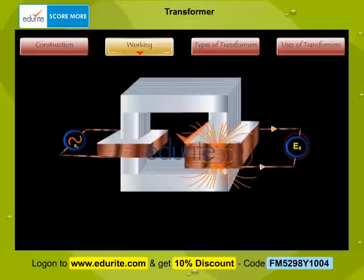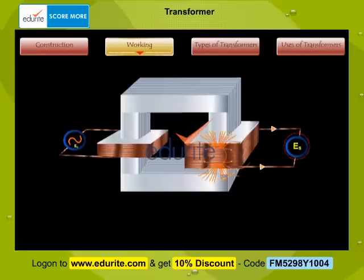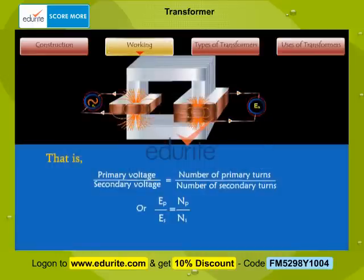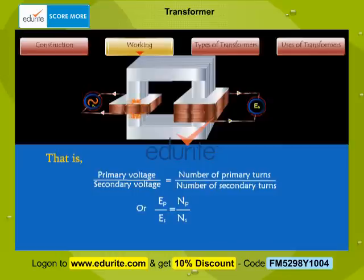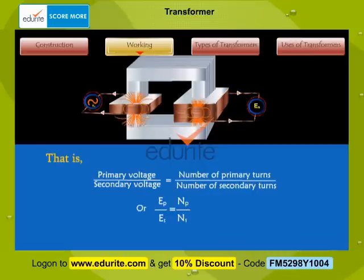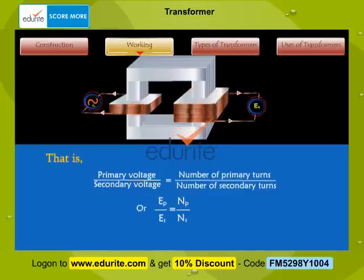Due to mutual induction, an EMF is induced in the secondary coil. The voltage induced in the secondary is determined by the turns ratio — that is, primary voltage divided by secondary voltage is equal to the number of primary turns divided by the number of secondary turns, or EP by ES is equal to NP by NS.